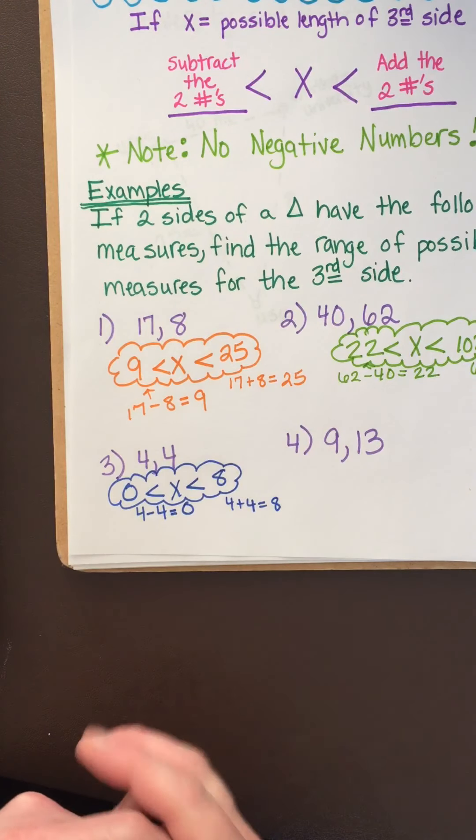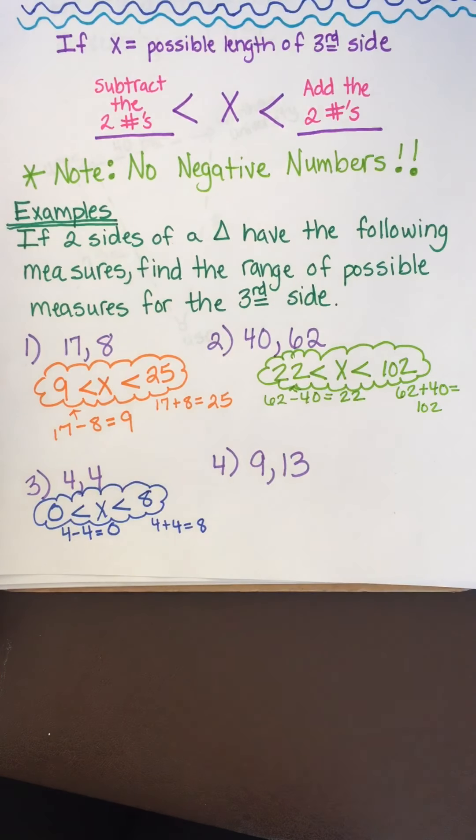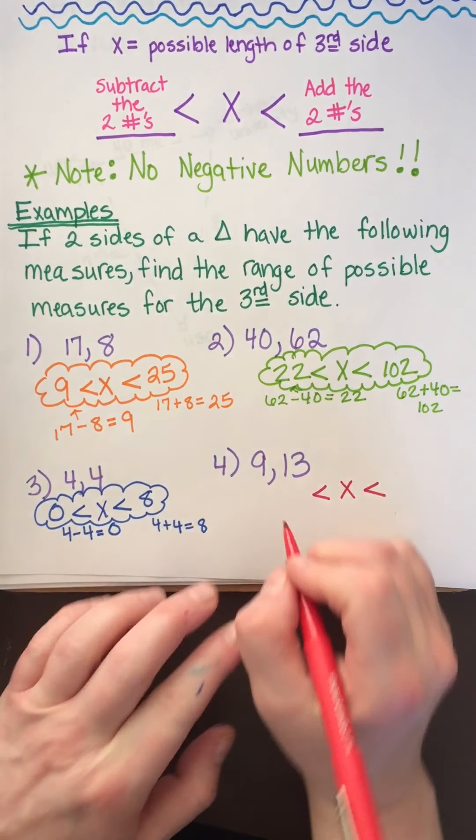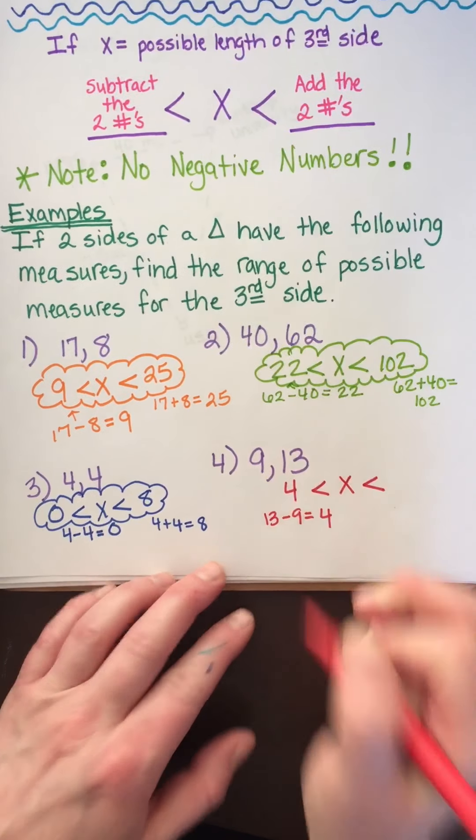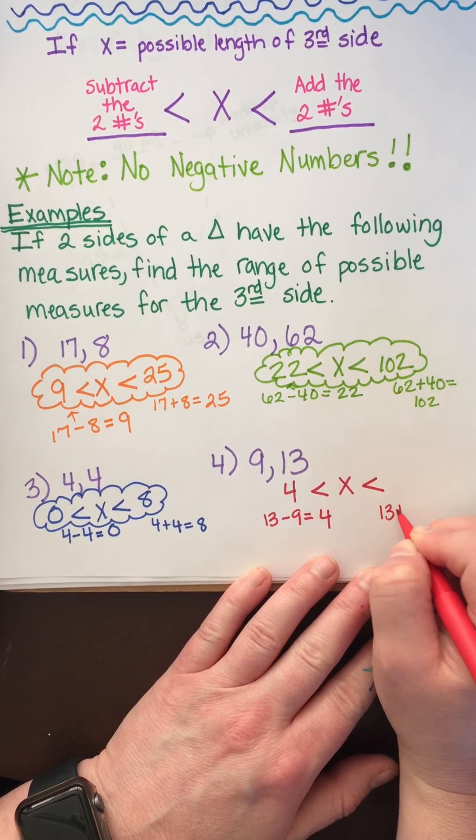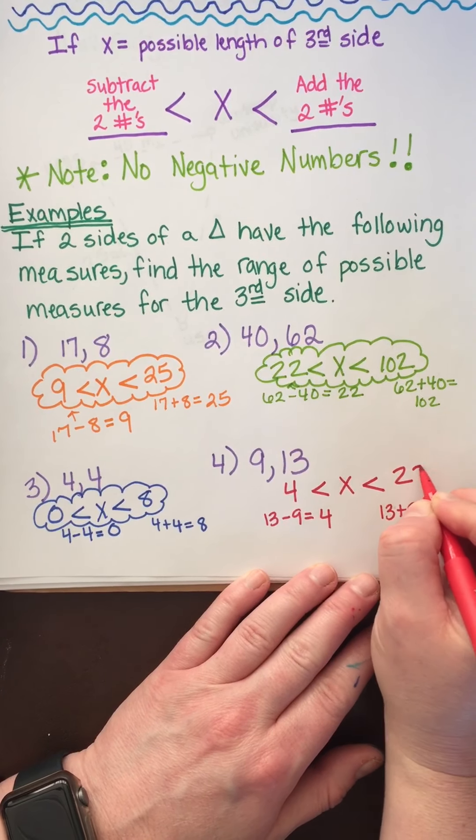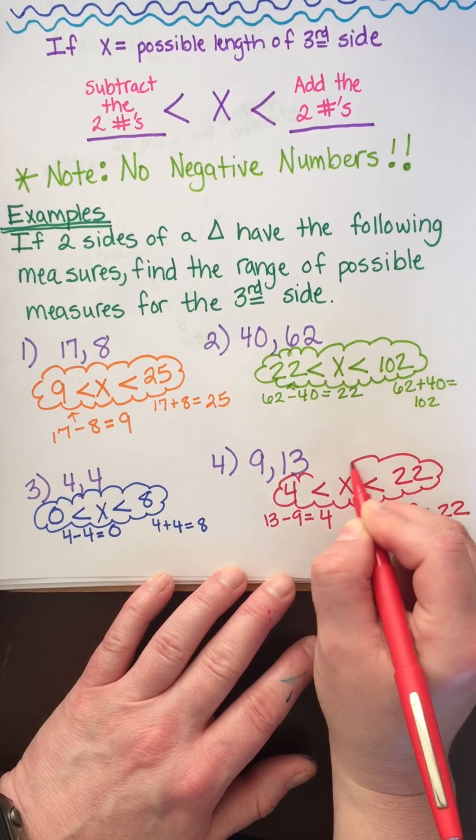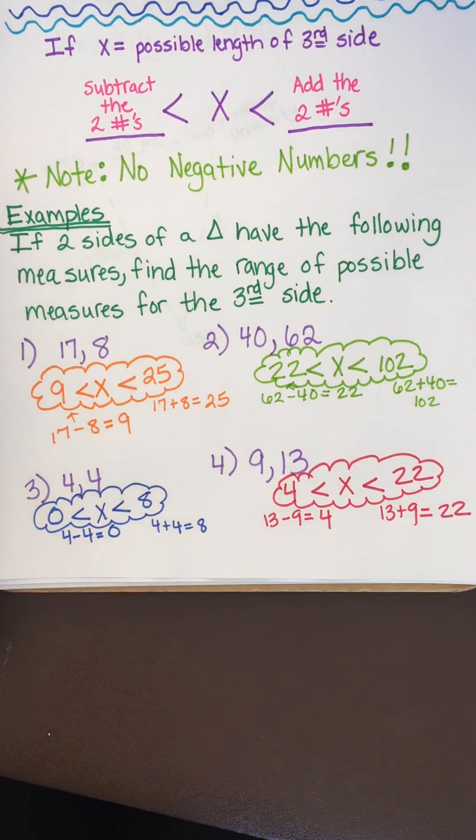And one more like this, and then we're going to look at a word problem. We have 9 and 13, draw my compound inequality. We're going to subtract them. 13 minus 9 is 4. So that is the number that goes on the left. And then I add them. 13 plus 9 or 9 plus 13 really doesn't matter. And we get 22. And that is my answer. That is the range. Any number between 4 and 22, like 7 or 19.4.